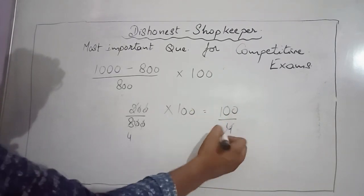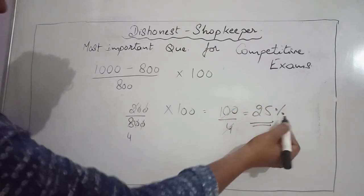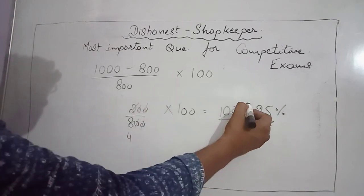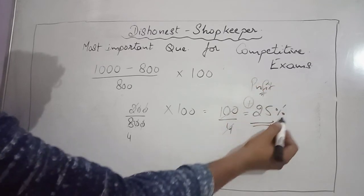We can cancel it and it comes out to be 25 percent. Since it's a positive figure, this means profit. So there's 25 percent profit.